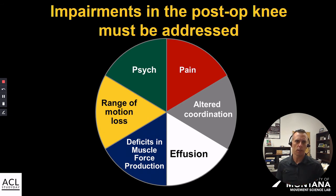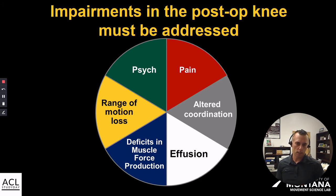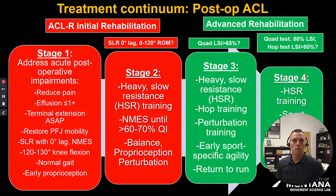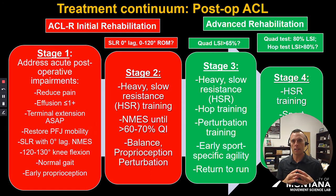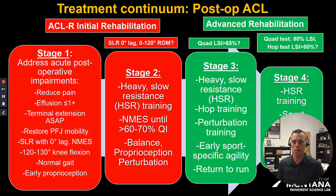We'll be talking about how these can affect running biomechanics and the ability to run. We've already briefly discussed the overall continuum when talking about getting back to performance. In this initial rehabilitation, it's really important for the athlete and clinician to spend a lot of time addressing those acute post-operative impairments — things like reducing pain, getting joint effusion down to one plus or less, and getting terminal knee extension. In our clinic, we look to get full knee hyperextension by day three; anything longer than that becomes a real point of concern. We want to restore patellofemoral joint mobility and have them able to do a straight leg raise without any lag, and we'll use NMES to improve quadricep activation and get after knee flexion.